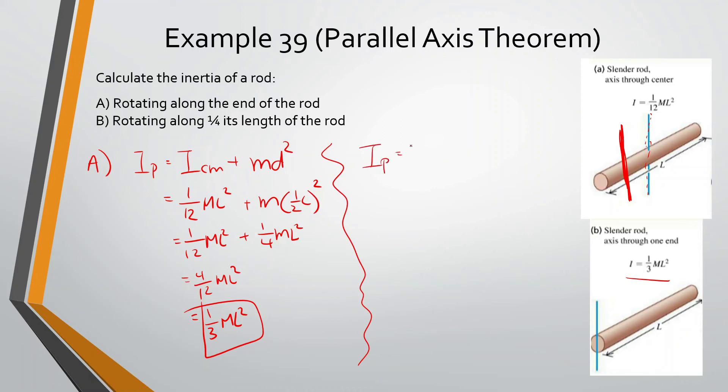Okay, so let's do one fourth ml. So IP is equal to ICM plus MD squared. Part B. So this is going to be equal to, again, one twelfth ml squared. That's its inertia at the center of mass plus m. And now this isn't going to be one half. This is going to be one fourth l. Because now it's going to rotate along its length of the rod, one fourth of the length.